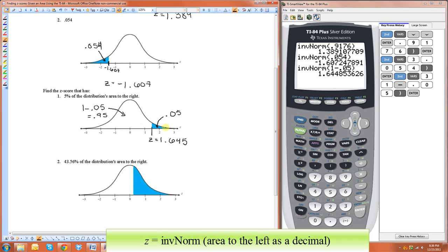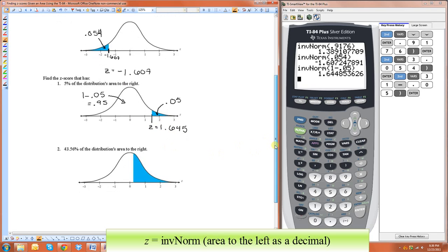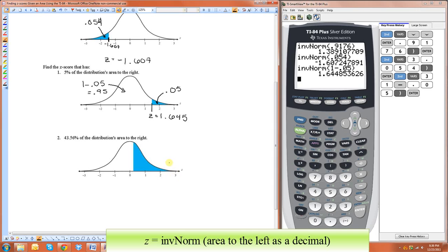Now, one way to make sure that you're getting the correct answer is anything below 50% should be a negative number, and anything above 50% should be a positive number. So that's one way to make sure that you're doing it correctly.